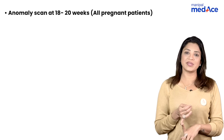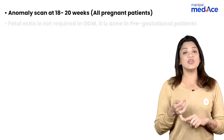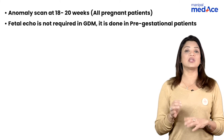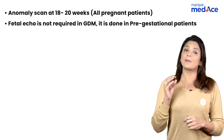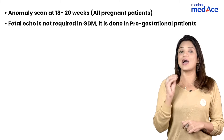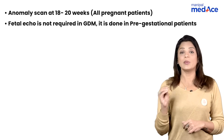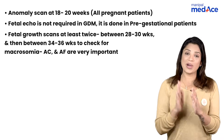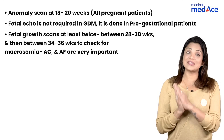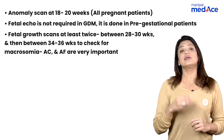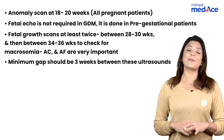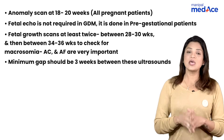For antenatal management, an anomaly scan is a must for all types of diabetes in pregnancy between 18 to 20 weeks. Fetal echocardiography is not recommended in GDM patients since they are not at risk for cardiac defects, but patients with overt diabetes should have a fetal echo between 24 to 26 weeks. Fetal growth scans are a must — one between 28 to 30 weeks and another between 34 weeks onwards to check abdominal circumference. The minimum gap between ultrasounds should be three weeks.